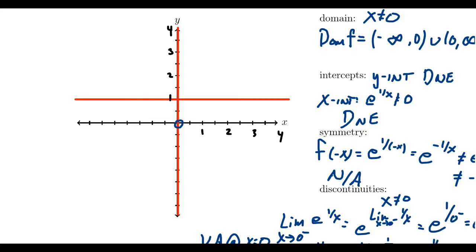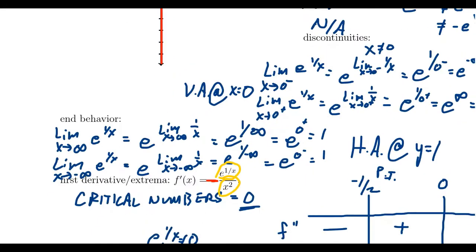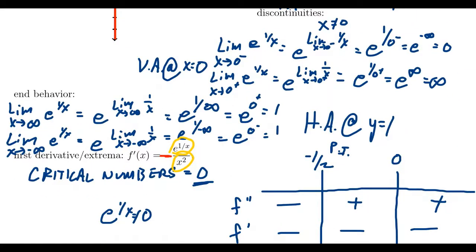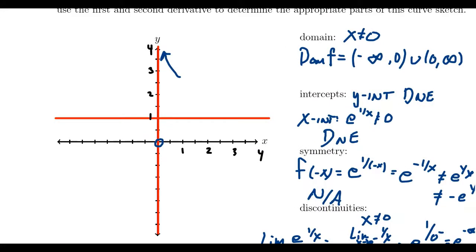As x approaches 0 from the right, the function goes off towards infinity. As x approaches positive infinity, from our limit calculation, the function approaches 1 from above — approaching the horizontal asymptote from above. So to the right of the vertical asymptote, we get a graph that decreases from infinity down toward the asymptote y equals 1, approaching it from above.